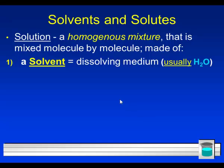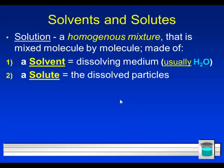A solution is a homogeneous mixture. That means all of the substances in the solution — and there have to be at least two different substances — are mixed completely, all the way down to a molecule-by-molecule level. A sample taken anywhere from a solution should be the same as a sample from any other spot. The solvent is usually water — the dissolving medium — and the solute is the stuff dissolved into the solvent. Very often that means an ionic compound dissolved in water.